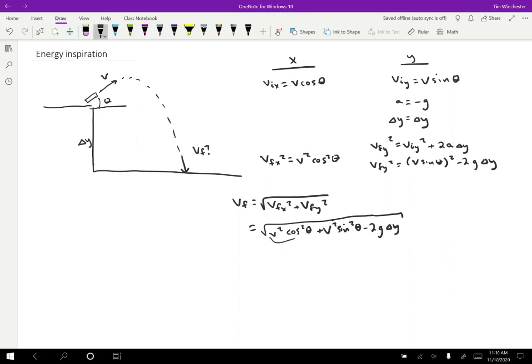And what I notice is that I have two terms under the square roots, V squared cosine squared theta and V squared sine squared theta. So depending on how recently you've taken trigonometry, you might recognize cosine squared plus sine squared as being just a way of writing one. And so we can simplify this to just V squared minus two G delta Y. And this is the result.